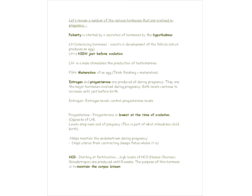Let's review the different hormones involved in pregnancy. First, puberty happens and hormones are produced in the hypothalamus — that's part of the brain. If the pituitary is the master gland, the hypothalamus is like the master of the master gland. Then we've got LH, which stands for Luteinizing Hormone. With females, LH assists in the development of the follicle — the structure that produces the egg. LH is very high just before ovulation. In males, LH stimulates the production of testosterone.